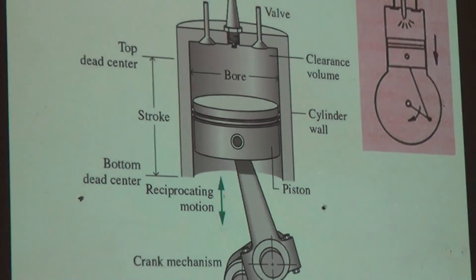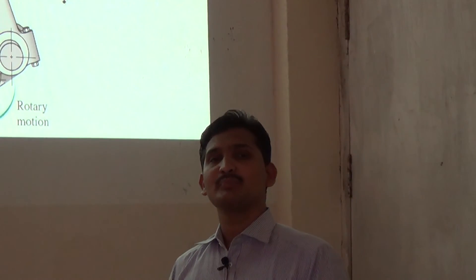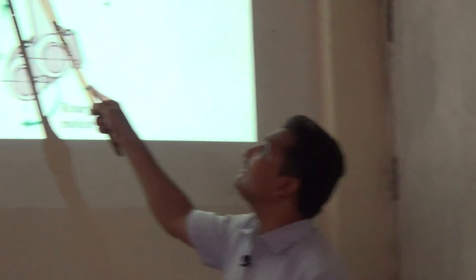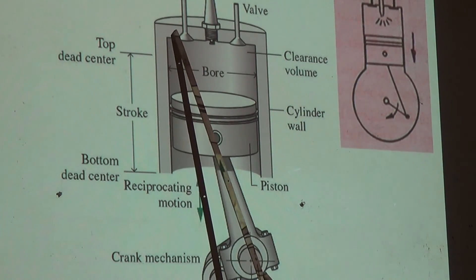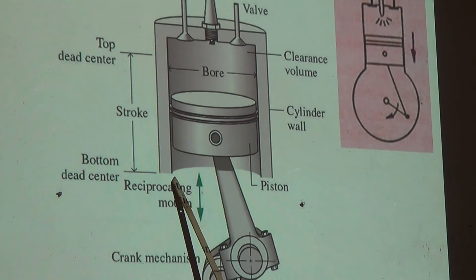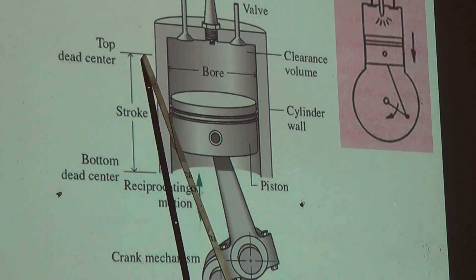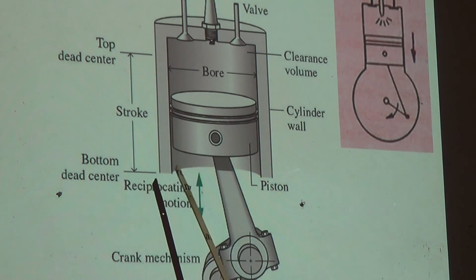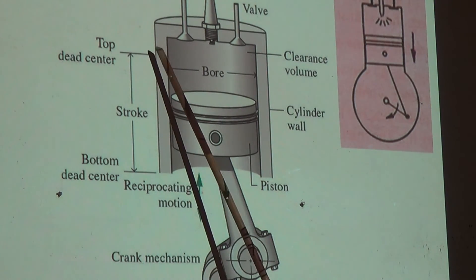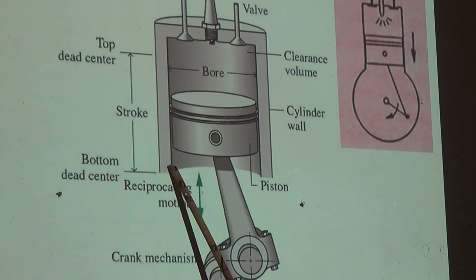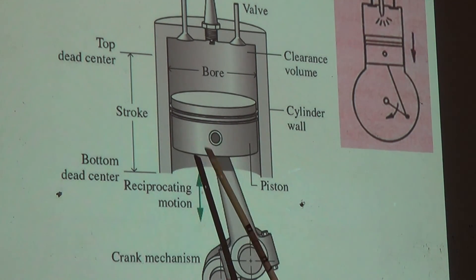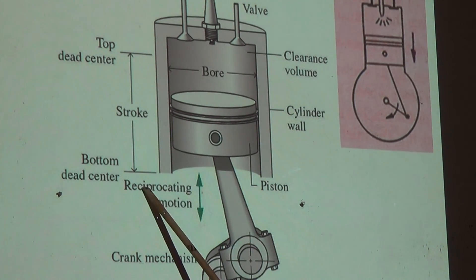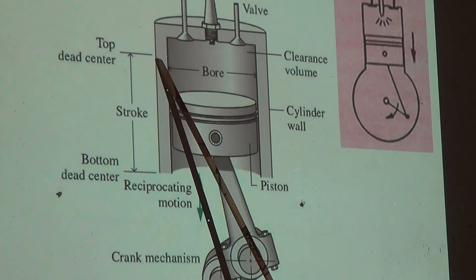An alternative definition: top dead center shows the position of the piston at the extreme top — the piston cannot move above the top dead center position. Bottom dead center shows the extreme bottom position of the piston — the piston cannot move below the bottom dead center point. Whatever piston movement there is, it will only be between top dead center and bottom dead center. The distance between these two points is called the stroke. Top dead center and bottom dead center are points, while stroke is a distance.